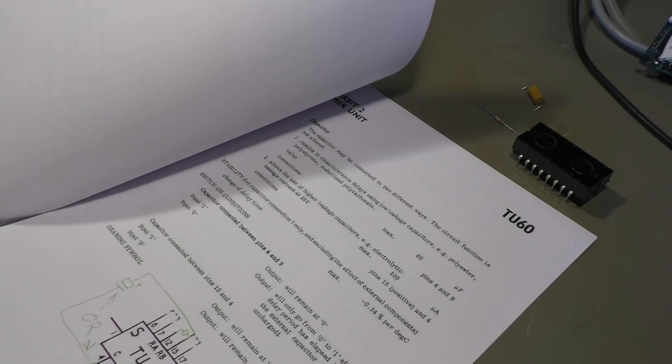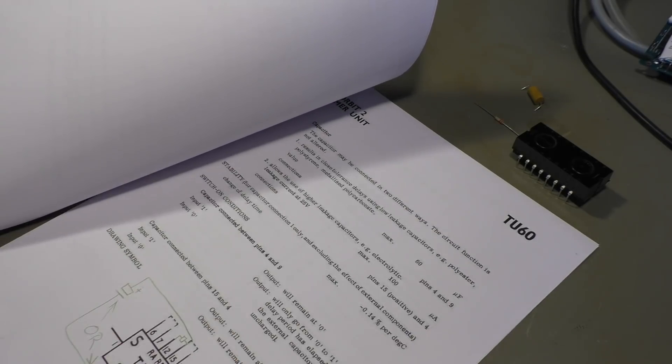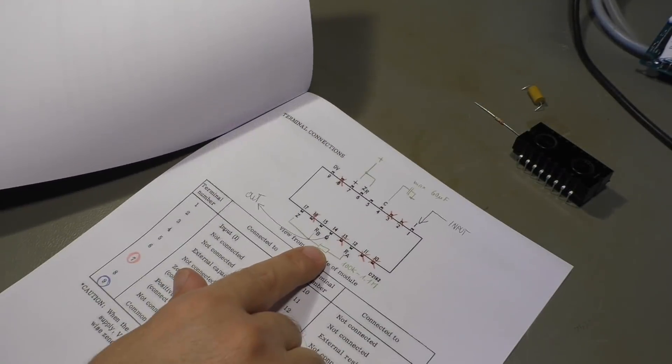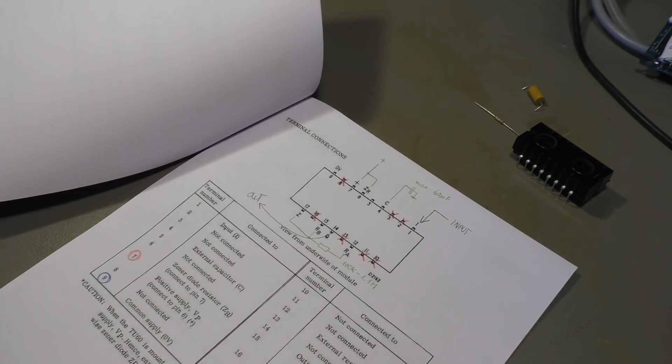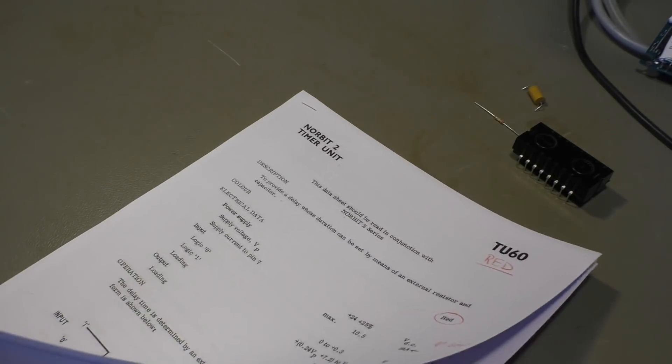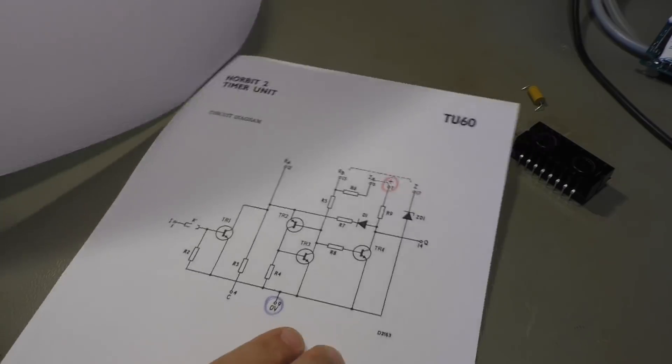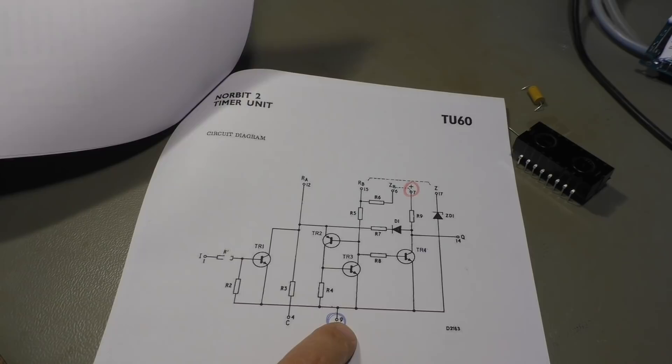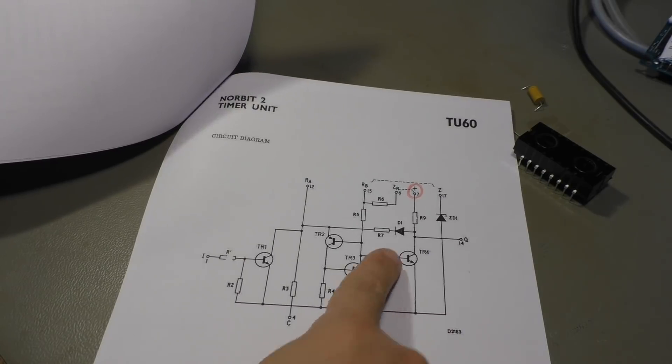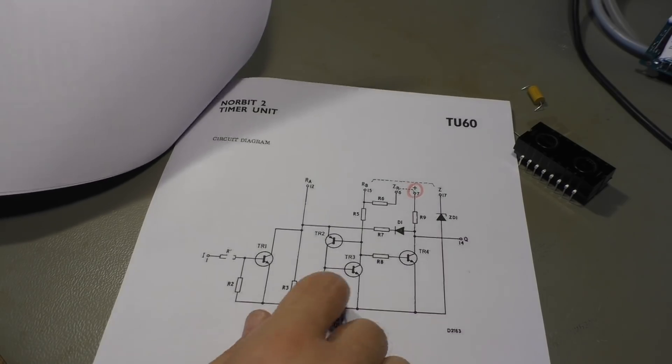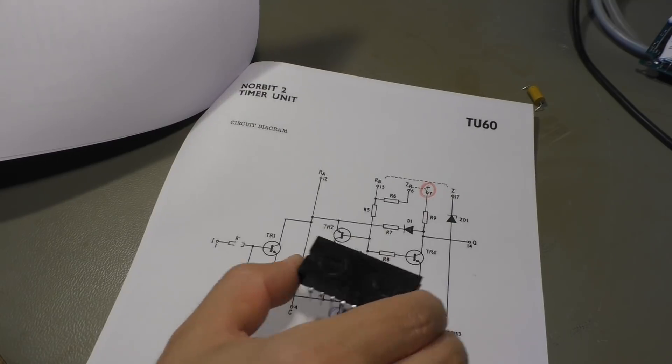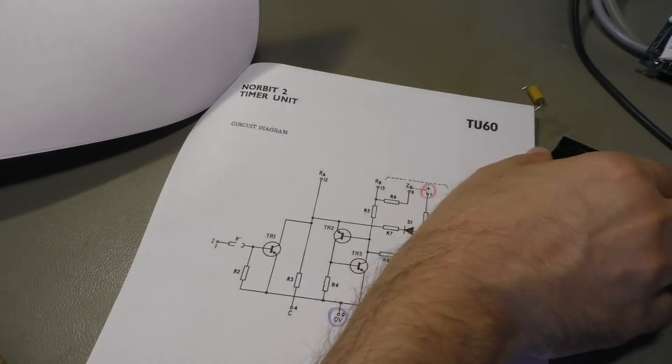That's the pinout here, and we also have the internal circuit which is relatively simple. It has four transistors, one diode, one Zener diode, and a couple of resistors. I'm pretty sure if we open this case we will see all these components in discrete form.